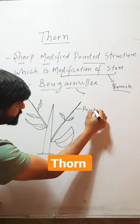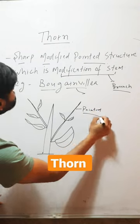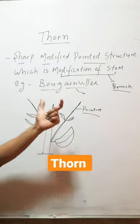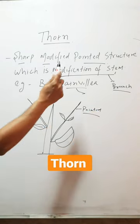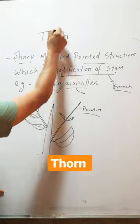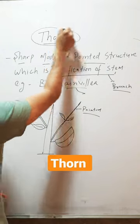So, these pointed structures, which are modification of stem, are called Thorn.